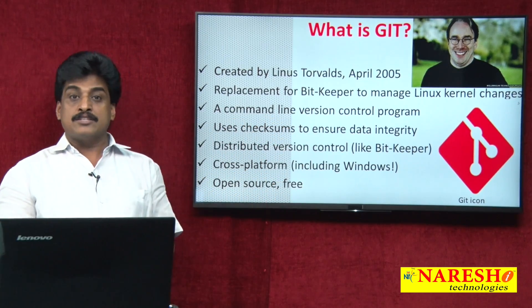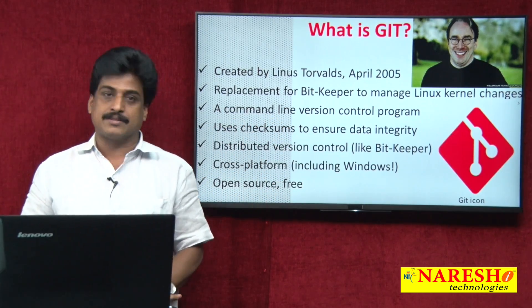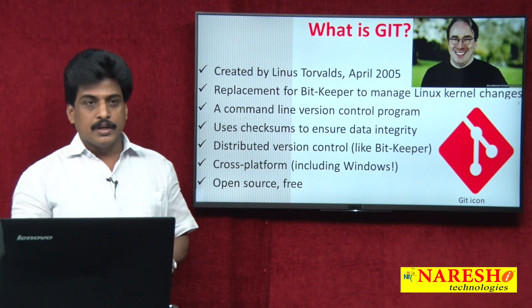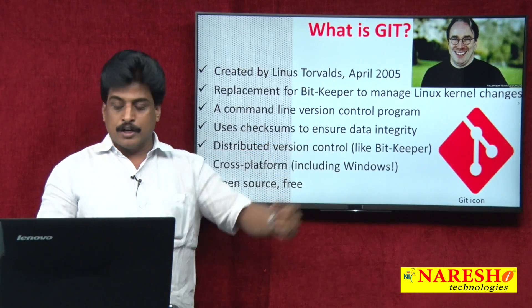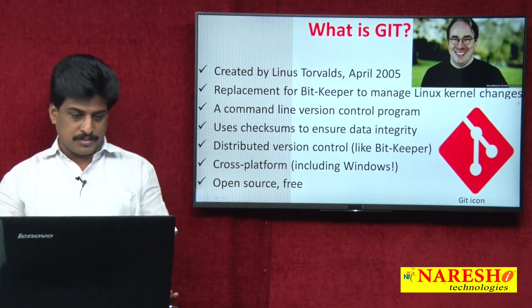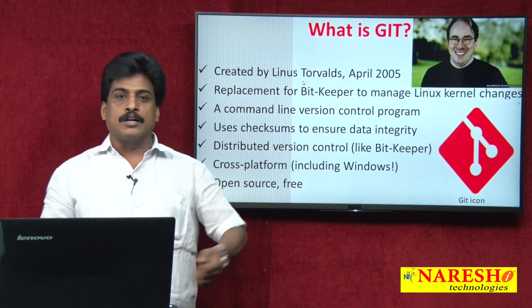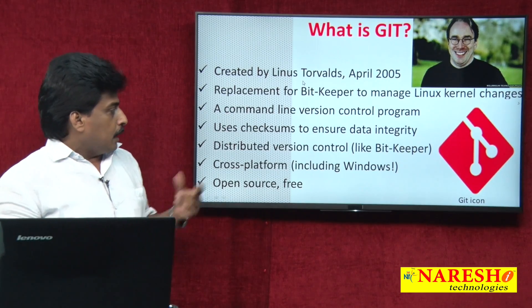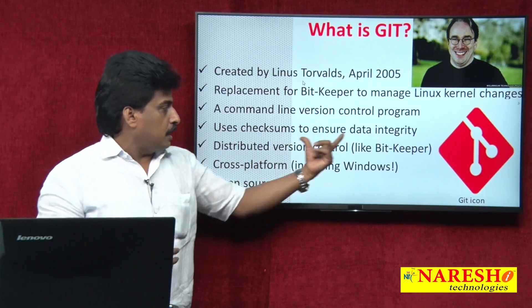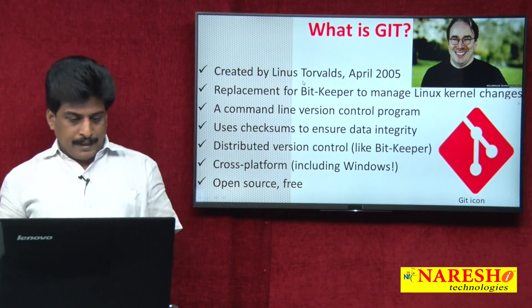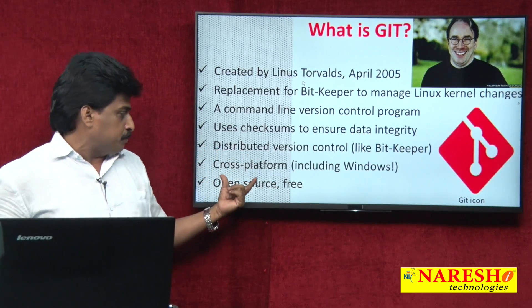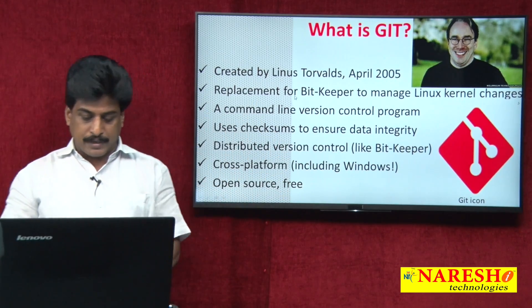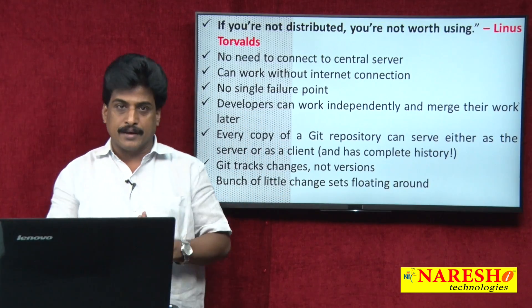Git was developed and invented by Linus Torvalds — the father of Linux (Linux = Linus + Unix) — in 2005, as a replacement for BitKeeper to manage Linux kernel changes. It is a command-line version control program that uses checksums to ensure data integrity, is a distributed version control system, and is completely cross-platform — Unix, Linux, Windows, and other operating systems — and is open source and free.